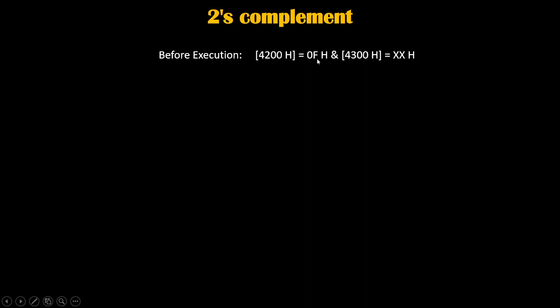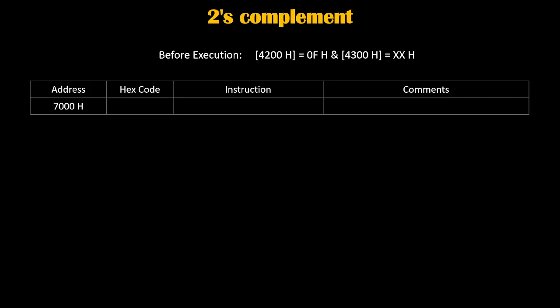We will start our program from address 7000h, so 7000h is the starting address of our program. The first instruction is LDA 4200h. LDA stands for Load Accumulator, so this instruction will load the accumulator from memory location 4200h. Since the value at 4200h was 0fh, that 0fh gets copied inside the accumulator.